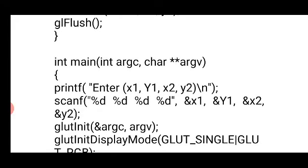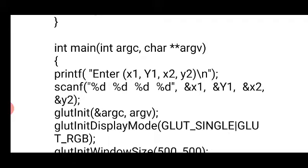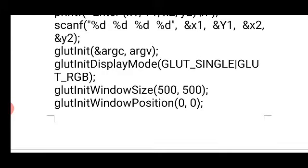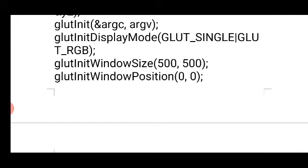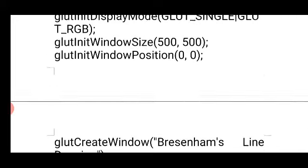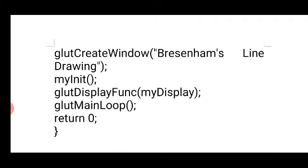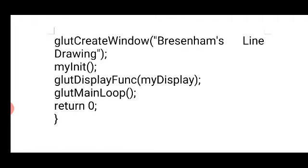In the display function, we simply call the drawLine function with these four parameters. In the main function, we first read the two endpoints of the line: x1, y1, x2, y2. After that, we initialize the GLUT environment by calling glutInit, then create a window of size 500 by 500 with glutInitWindowPosition set to 0.